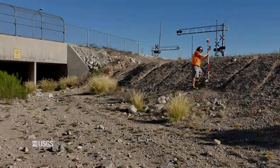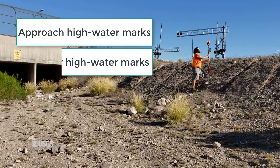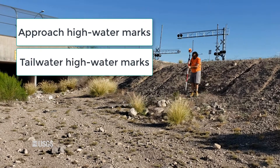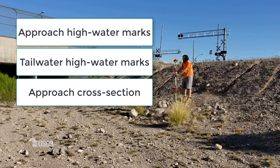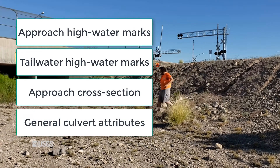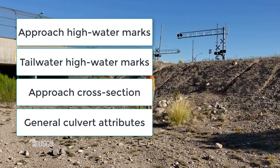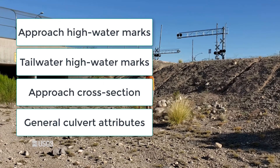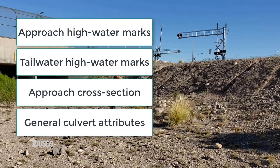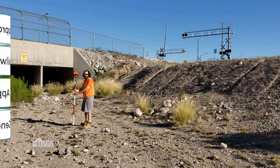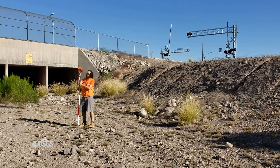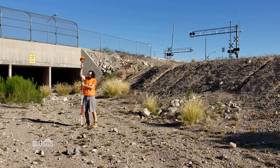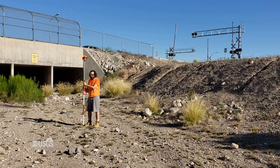In previous videos, I discussed surveying the approach high watermarks, the tailwater high watermarks, and approach cross section, and the general attributes of box, pipe, and pipe arch culverts. Even if you have some aspect of a non-center culvert, you still need to measure the features described in those videos.